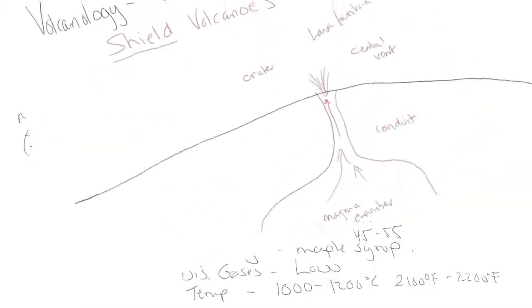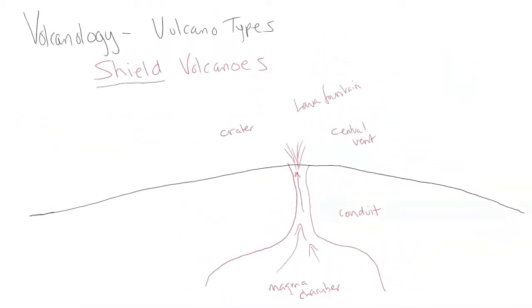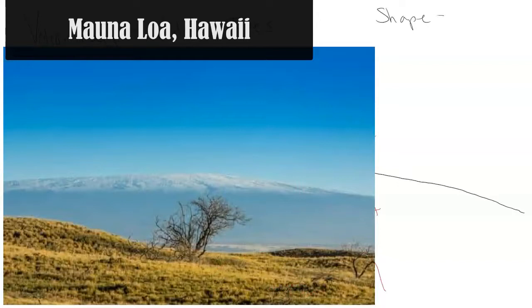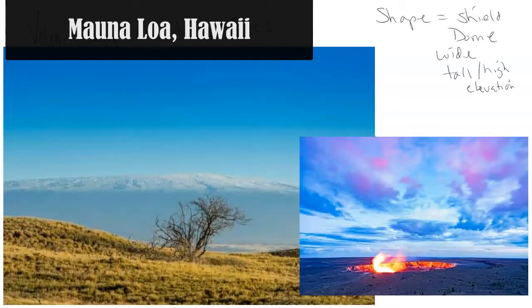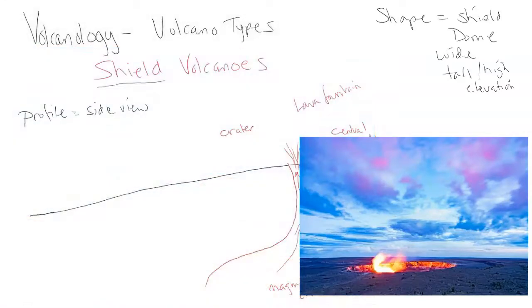I've drawn a very basic schematic or diagram of a shield volcano from a profile view. Don't forget profile view is a side view. Looking at the side of this volcano, as you can see, the general shape gives it away. Obviously the shape is what gives its name shield, very like a semi-sphere or dome shape, and it is extremely wide and it can be very tall or high in elevation. You can be on the volcano and not really realize it's a volcano because it's not that classic very steep sided, very aggressive looking volcano. It's very subdued.